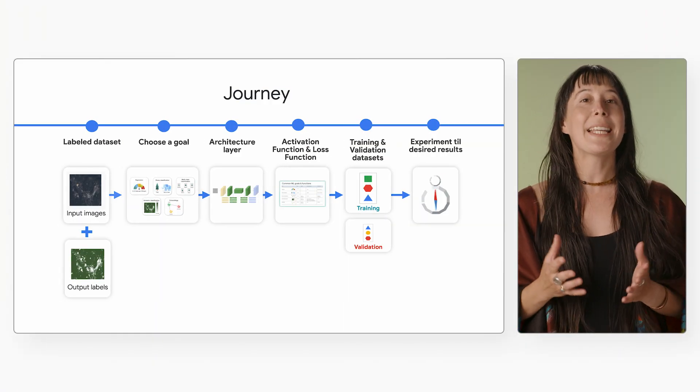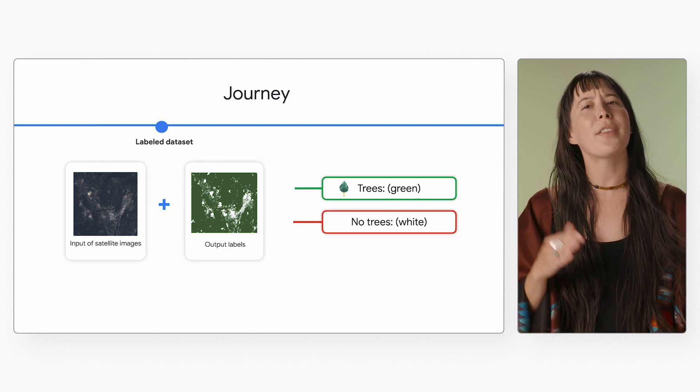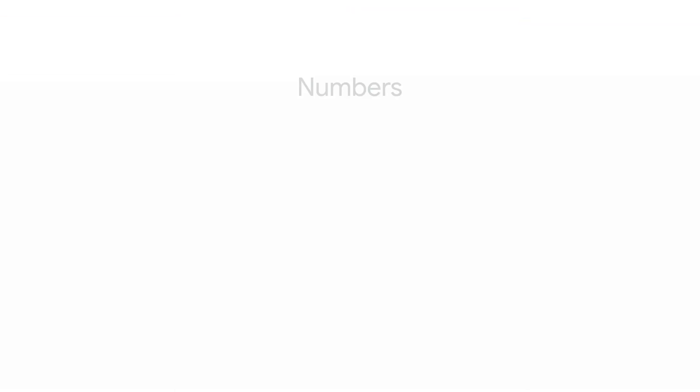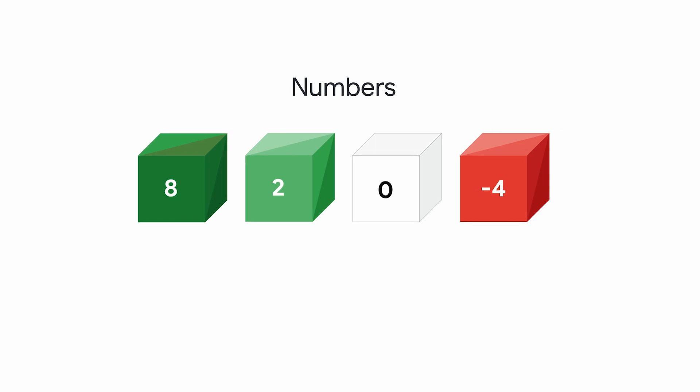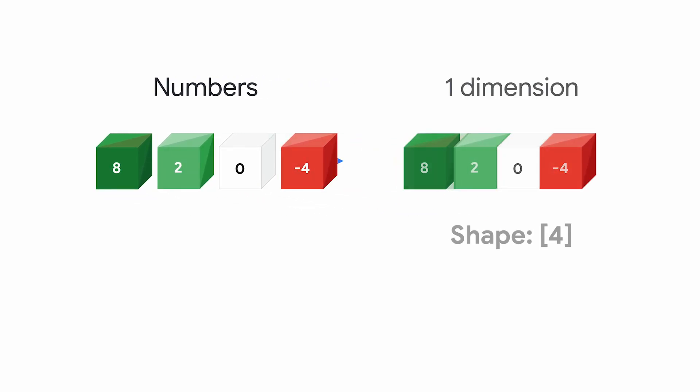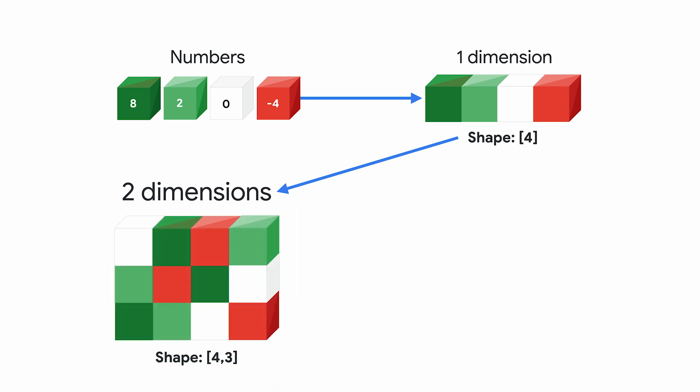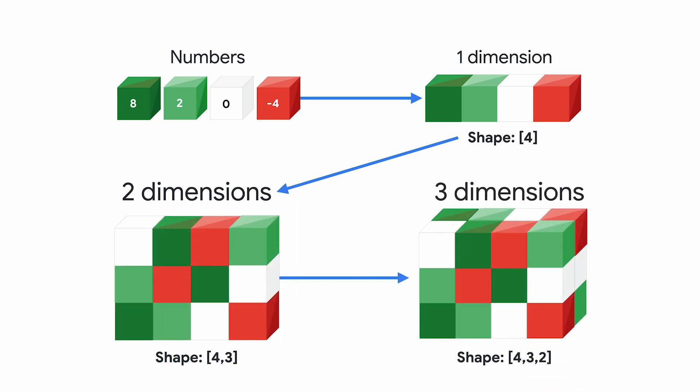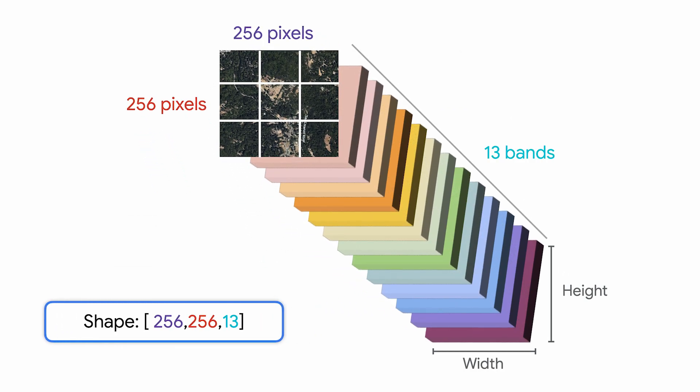To begin, we will need a data set that includes satellite images that have labels of where there are trees and where there aren't. Now, machine learning only understands tensors, which are numbers stored as an array or vector in one dimension, or as a matrix or table in two dimensions, or as multi-dimensional data. With this in mind, we convert satellite images into tensors, where each pixel has one number for every satellite band.